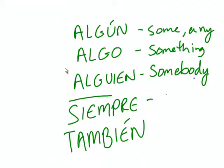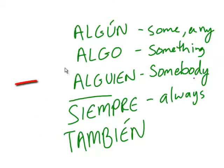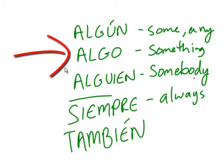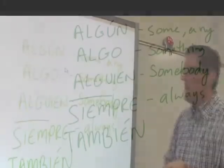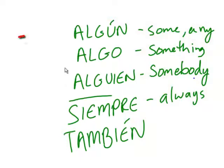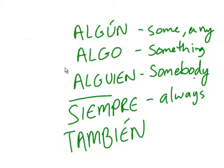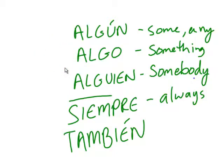Siempre tenemos exámenes en la clase de español. Alguien tiene mi diccionario — no tengo mi diccionario. Hay algo en mi zapato. Algunos de ustedes entienden la palabra siempre — some of you. Hay algo que quiero decirte — there's something I want to tell you. Alguien, siempre, también.